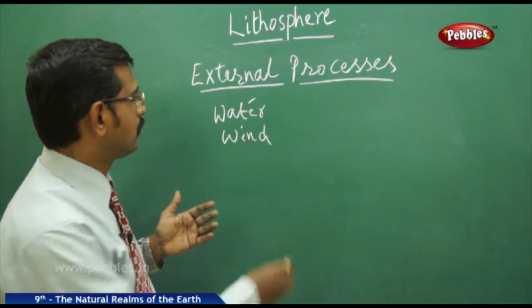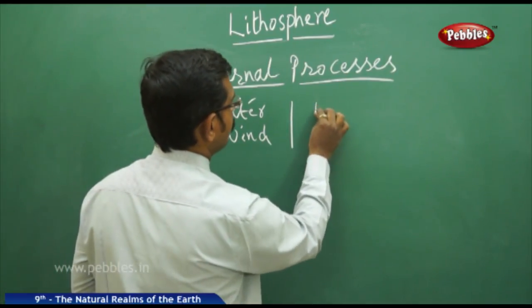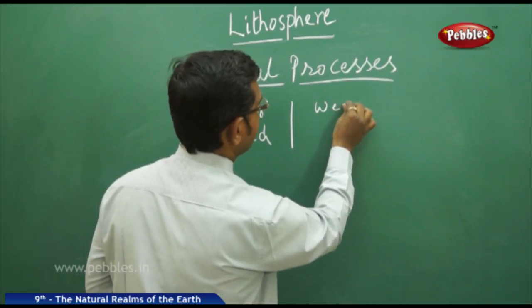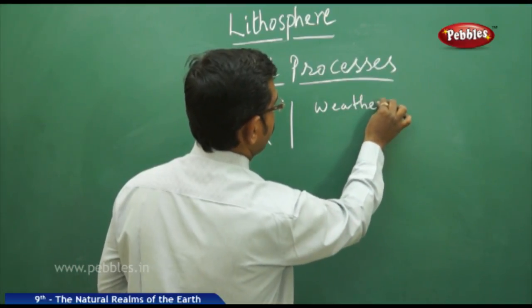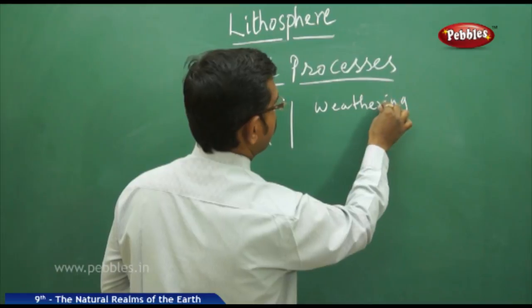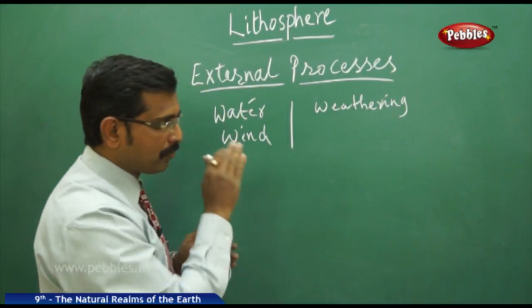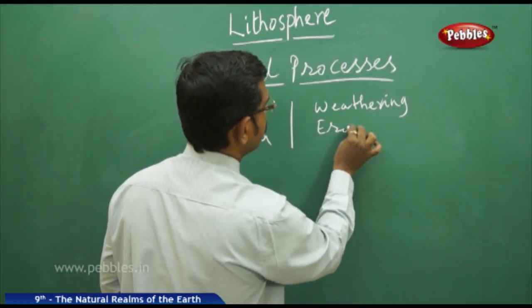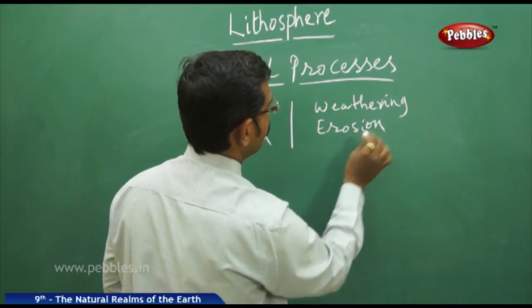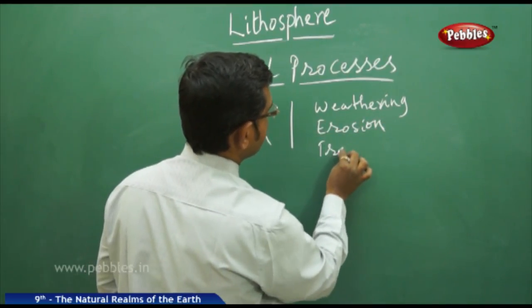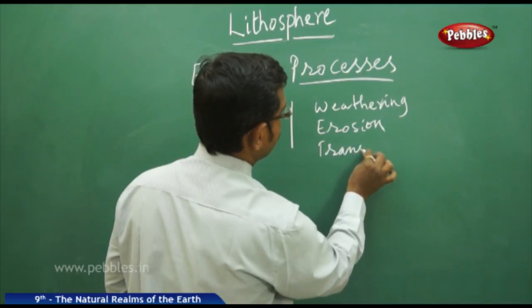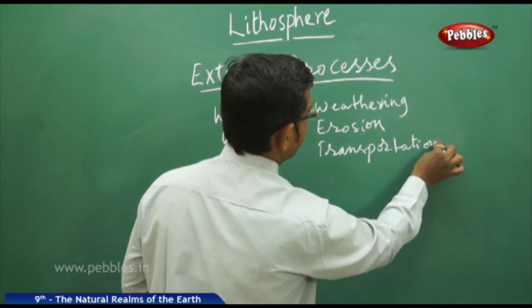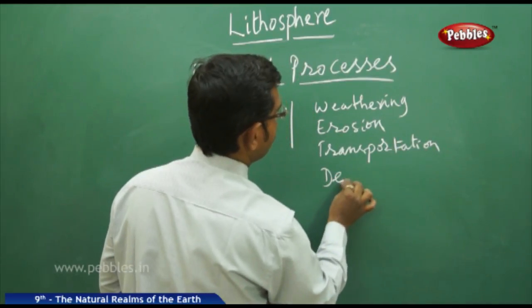All four features are found in the external process: weathering — which is the breaking of rock — erosion, transportation, and deposition.